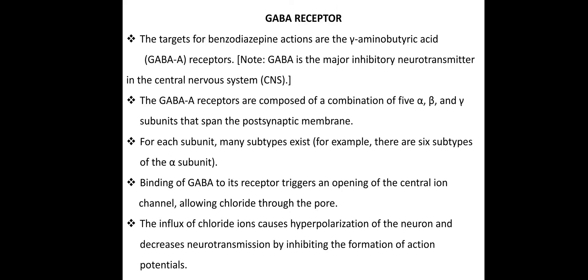The influx of chloride ions causes hyperpolarization of neurons and decreases neurotransmitter release by inhibiting the formation of action potentials. In our body, action potentials are inhibited because neurons undergo hyperpolarization, meaning neurotransmitter release is inhibited.